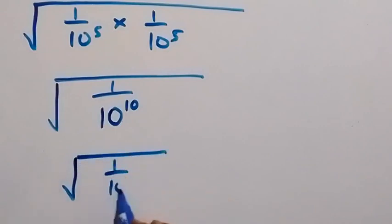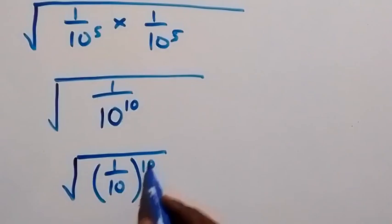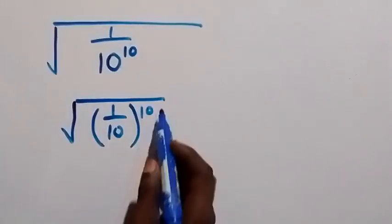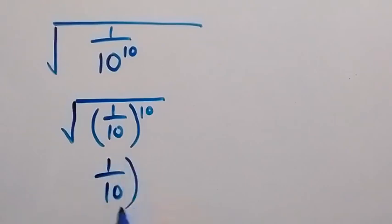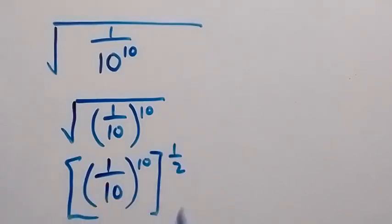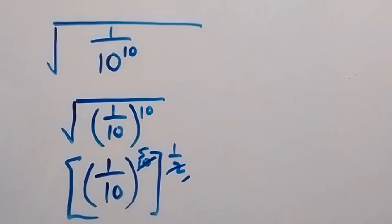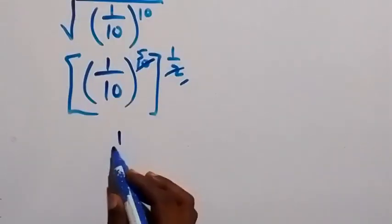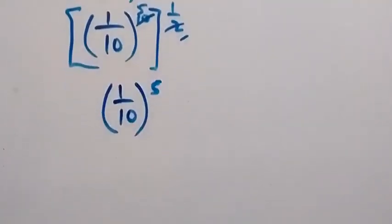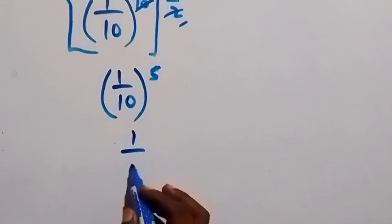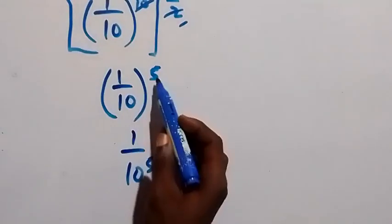Because 1 raised to power 10 will still be 1. From here we apply the law of indices — square root of 1 raised to power 1 over 10 — then this power multiplies. So 1 over 2 times 10 gives 5, same as writing this as 1 over 10 raised to power 5.